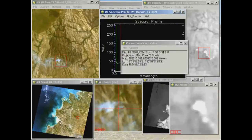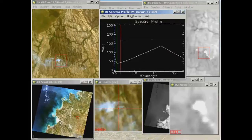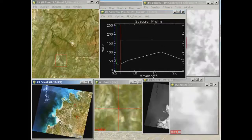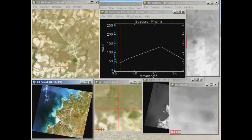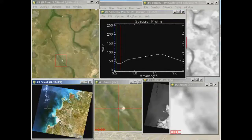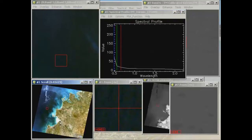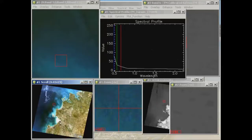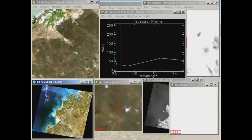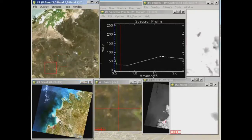So as I move to different features in my image, you'll see that the graph changes. It'll change quite a bit for water, for fire scars, and the profile is relating exactly to that crosshair in the zoom window there.